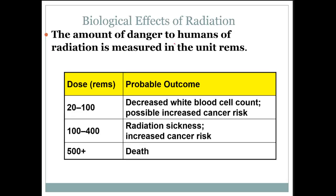The amount of danger to humans from radiation is measured in the unit of REMS. Between 20 and 100 REMS, there is a decrease in white blood cell count with a possible increased cancer risk. Between 100 and 400 REMS, there is radiation sickness and increased cancer risk. At 500 REMS and above, there is potential for death. Those are some of the pros and cons of using radioisotopes.